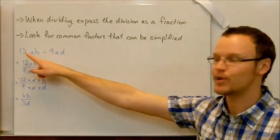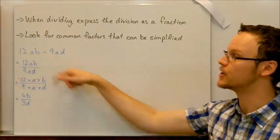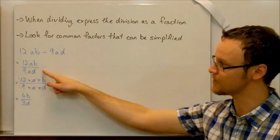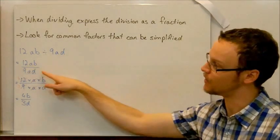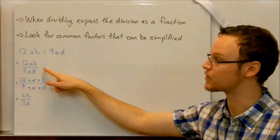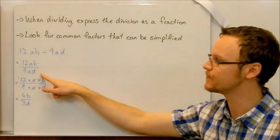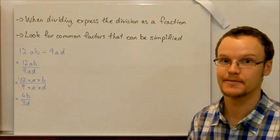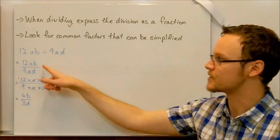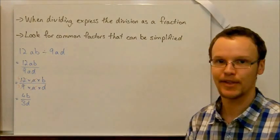Here's an example, 12ab divided by 9ad. We express it as a fraction, 12ab over 9ad, with 12ab being the numerator and 9ad being the denominator. We look for common factors. One of our common factors that's very easy to see is a's. They both have a's.